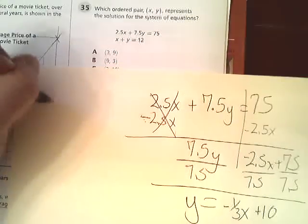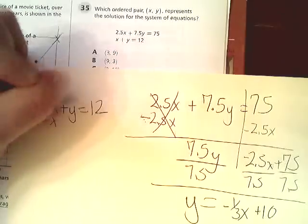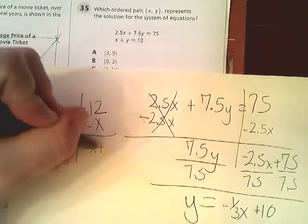The second one says x plus y equals 12. So I'm going to subtract x from both sides, try to get y by itself. Negative x plus 12.